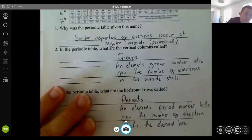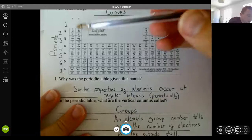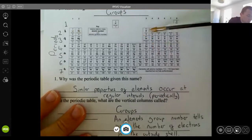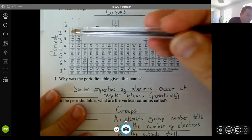So again, if we look, for example, at period two, lithium, beryllium, boron, carbon, nitrogen, oxygen, fluorine, neon, when you drew them, they only had two shells.